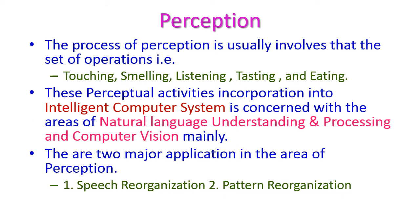The next one is perception. This is the most trending area of artificial intelligence nowadays. The operations involved under perception are touching, smelling, listening, tasting, and eating — that is, by using these operations we try to understand the environment or problem area.